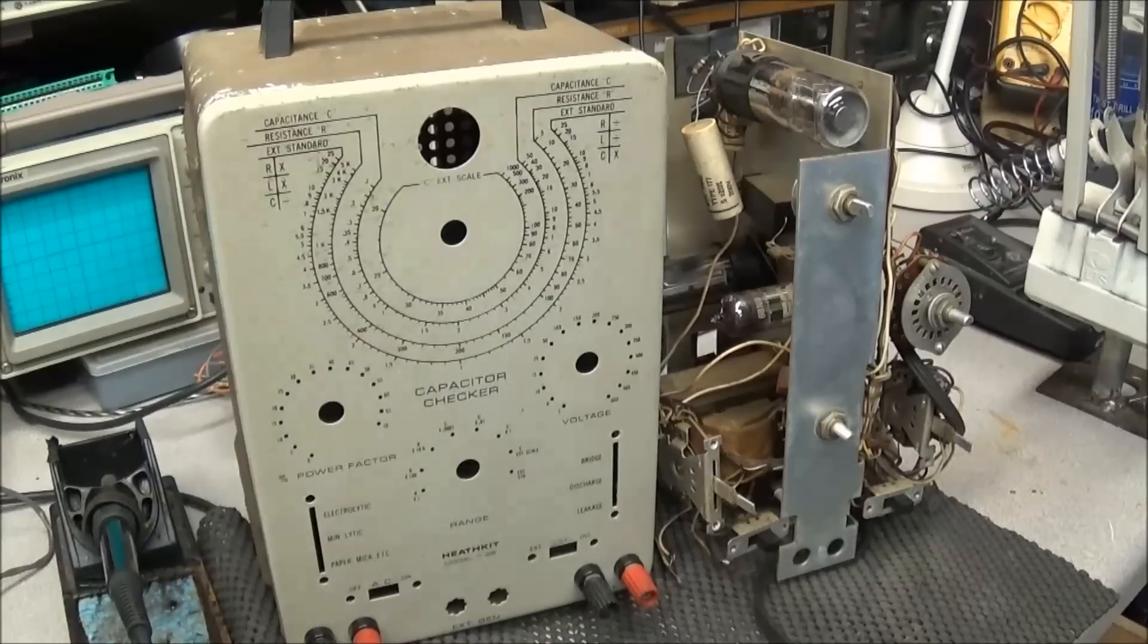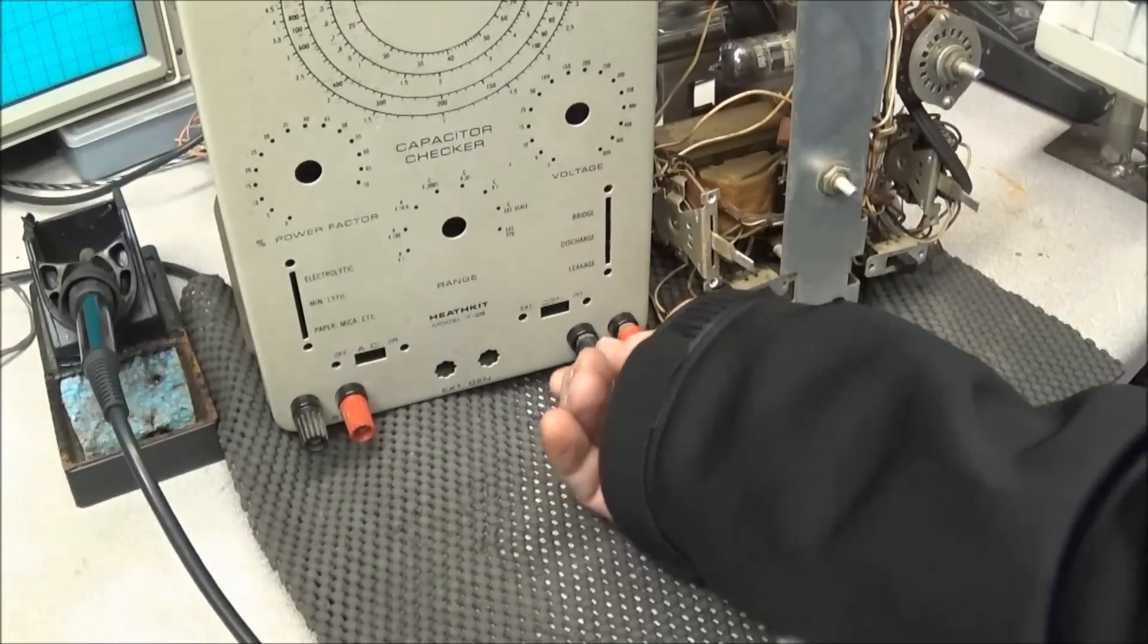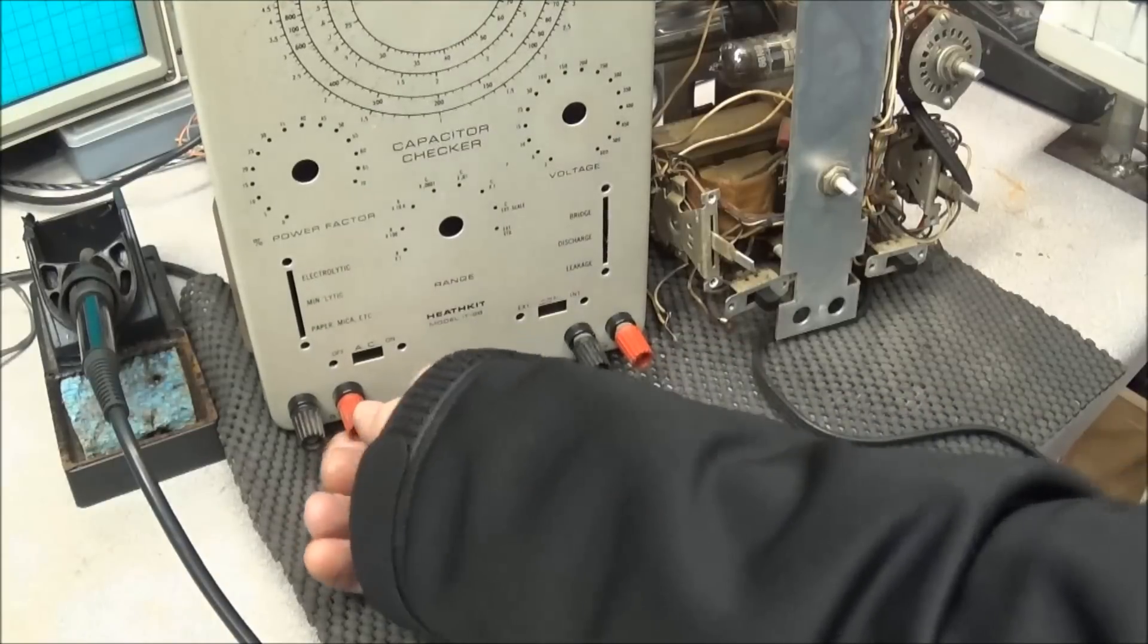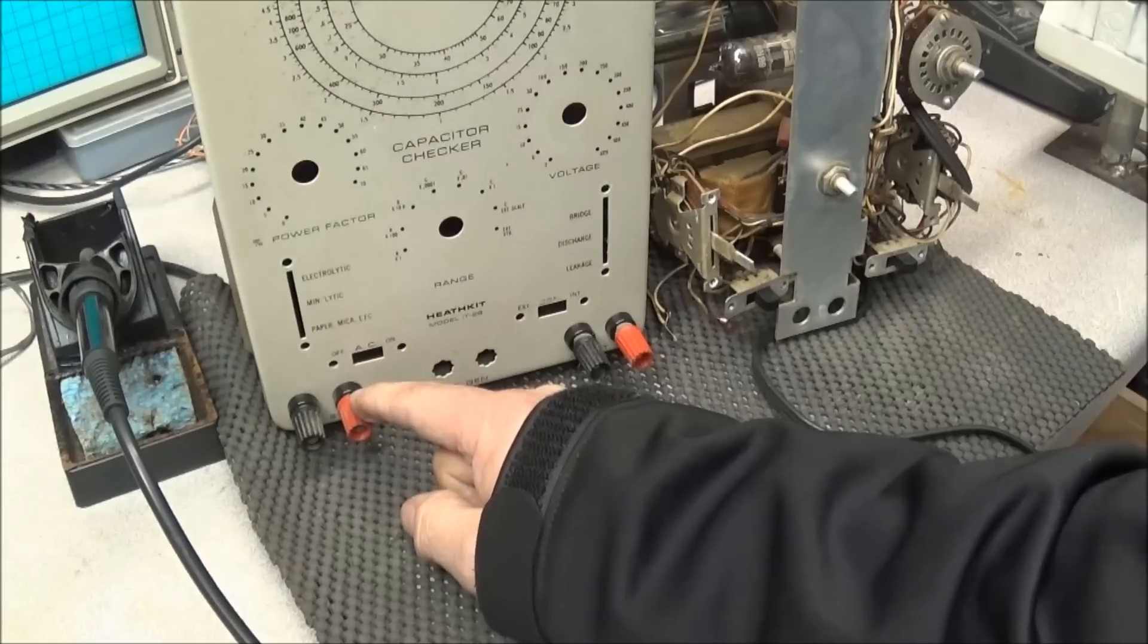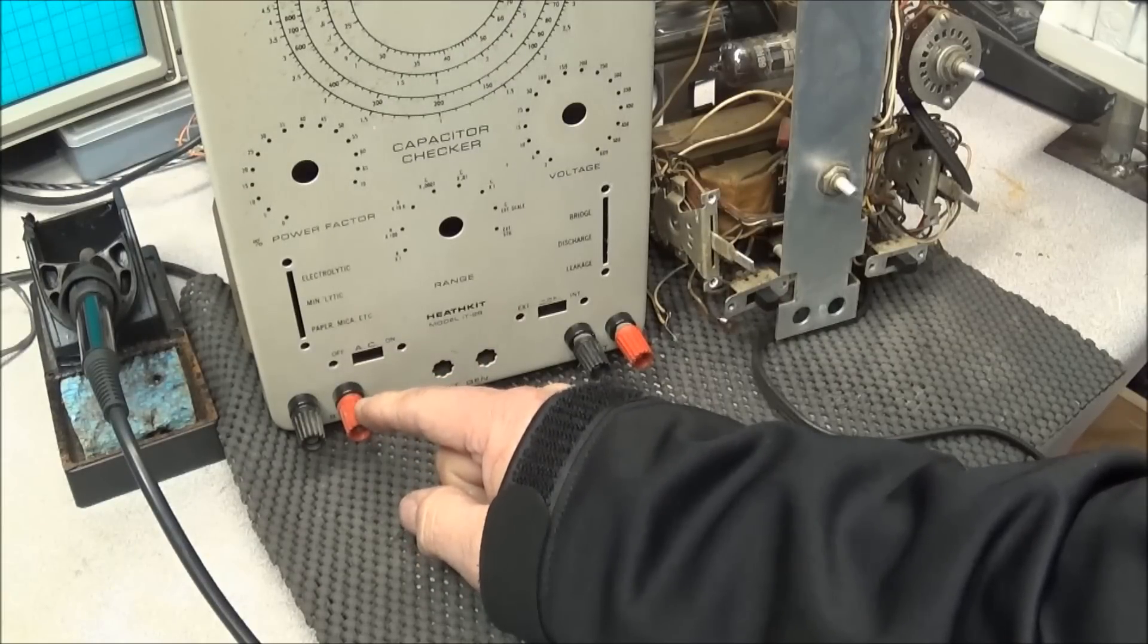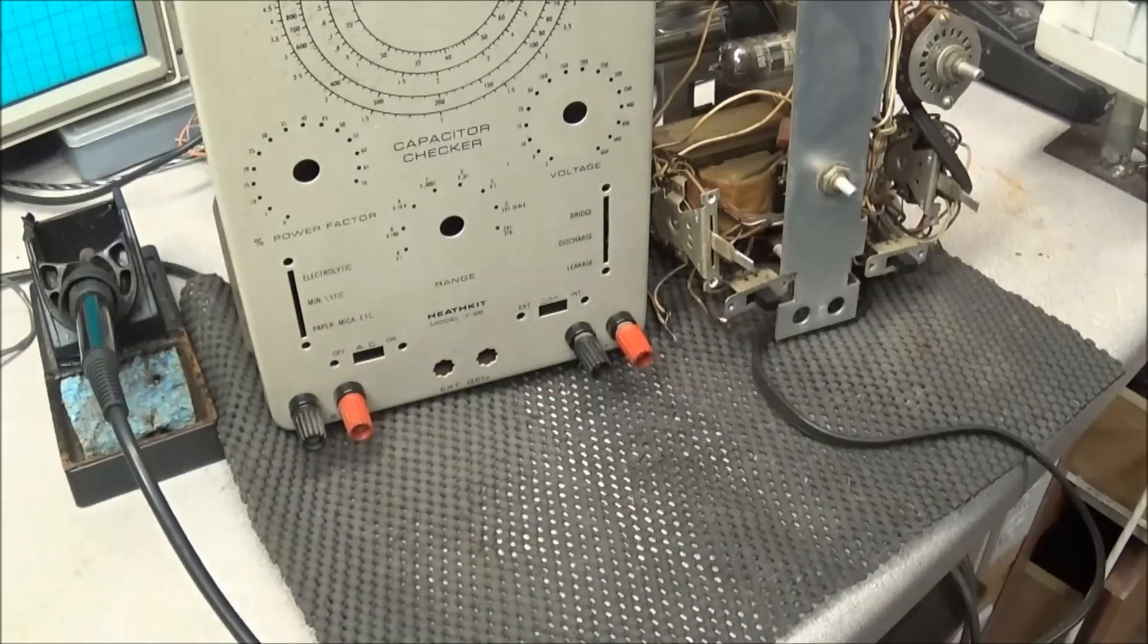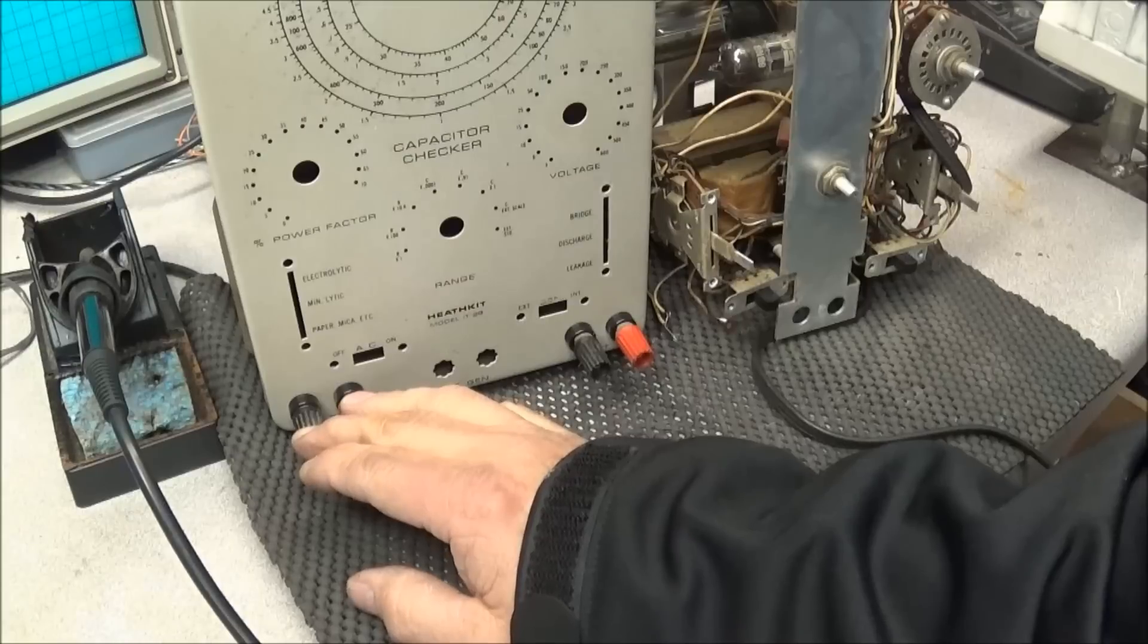One thing I have to get for the capacitor meter, which is the last thing I need to order, is some new banana jacks. These, as you can see, are completely froze up. Some of them won't even turn, and the reason being is that Heathkit used aluminum binding posts instead of steel. And after the years, that aluminum has become corroded and they freeze up and you can't turn them to save your life. Not even soaking them would do any good, so it's best just to snatch them out and replace them.